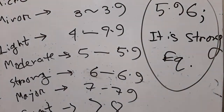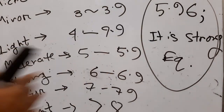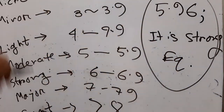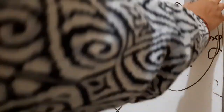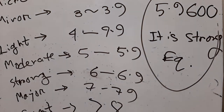For your exam, remember: always put displacement A in millimeters, time t in seconds, and use the Richter formula. Then classify the earthquake using the chart. Also, always write your Richter scale value to four decimal points. Follow these steps and the math is straightforward.